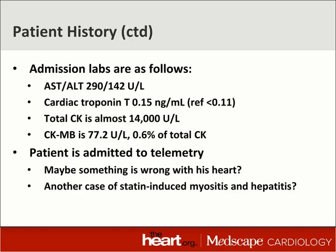His physical exam wasn't particularly revealing other than the fact that he's obese. He had a standard cardiac troponin T, which came back at 0.15 nanograms per milliliter. The reference in our lab was less than 0.11. He also had a very high total CK, almost 14,000. The CKMB was 0.6% of the total CK. His transaminases were also elevated, and he was admitted to telemetry. So, is there something wrong with his heart?